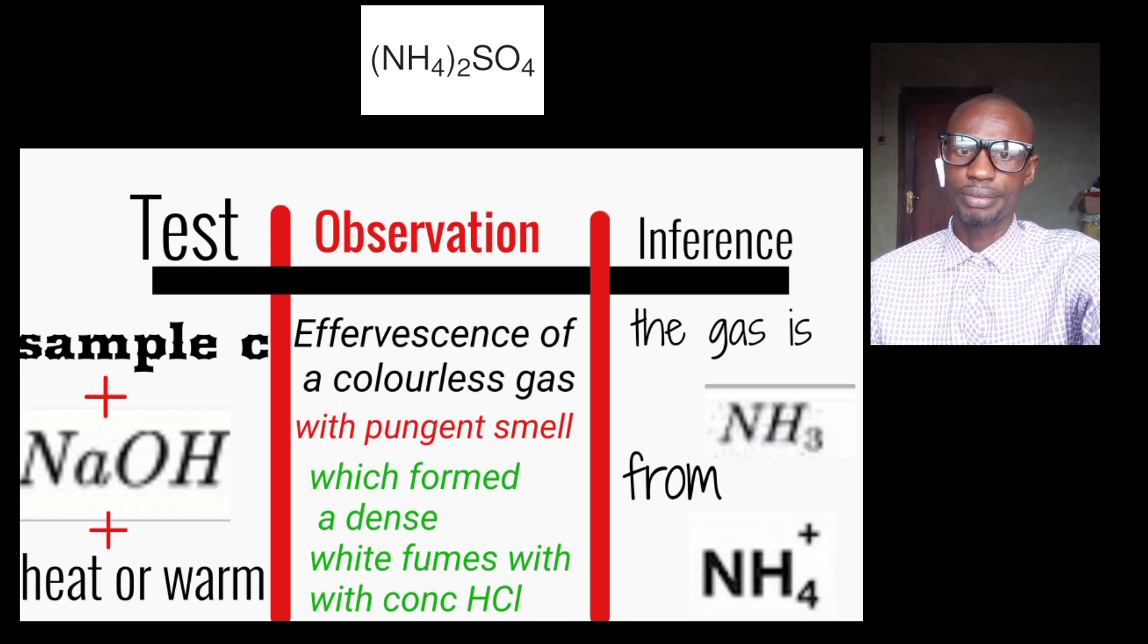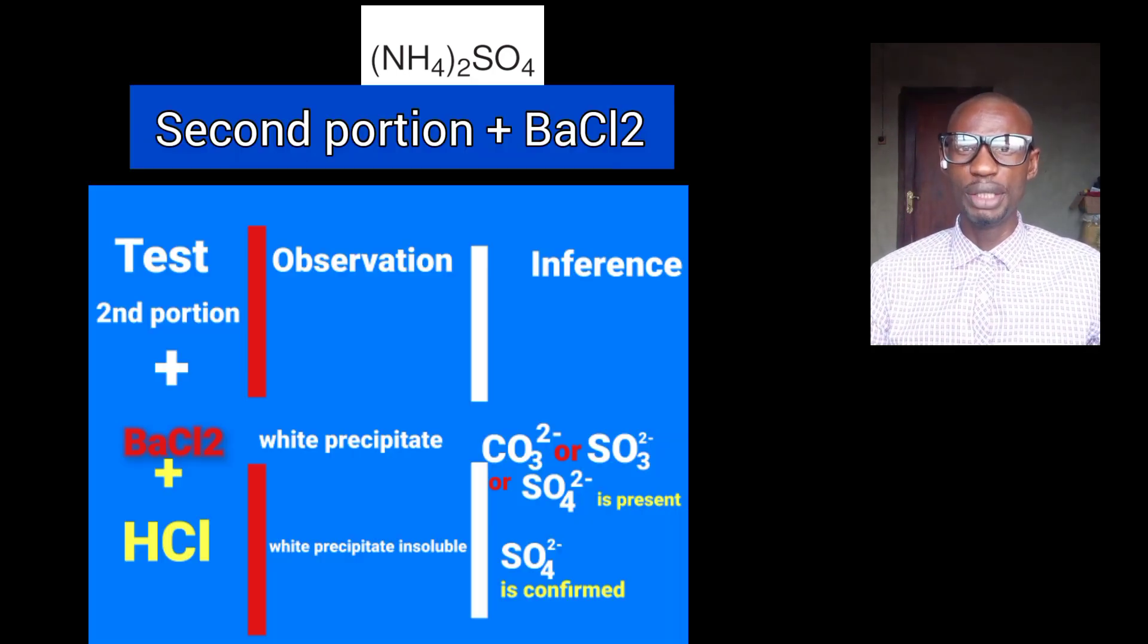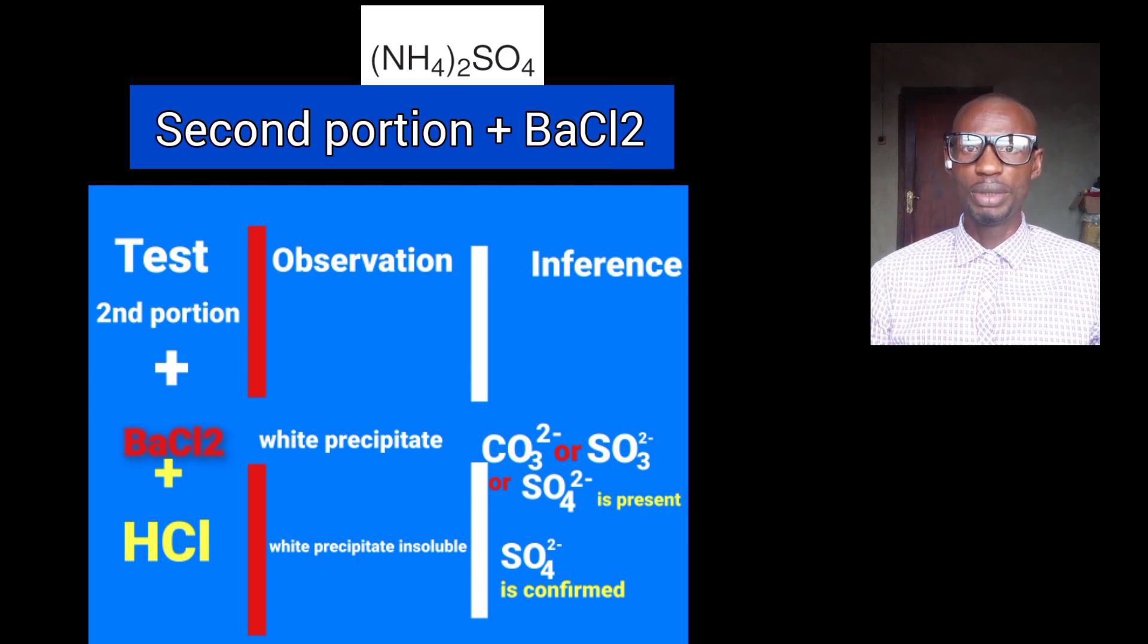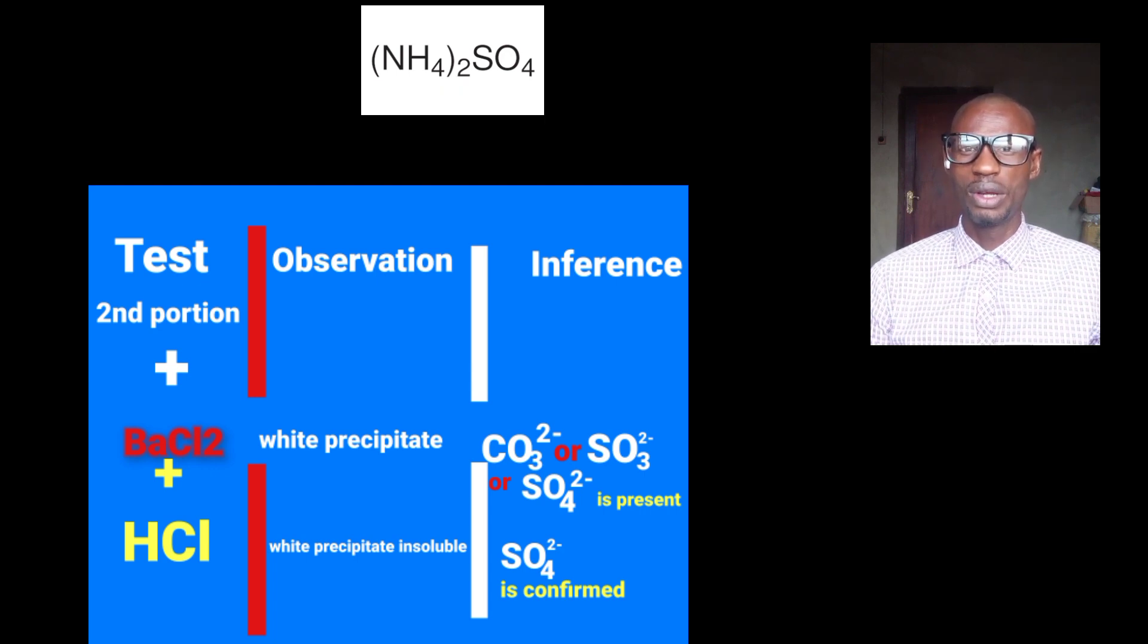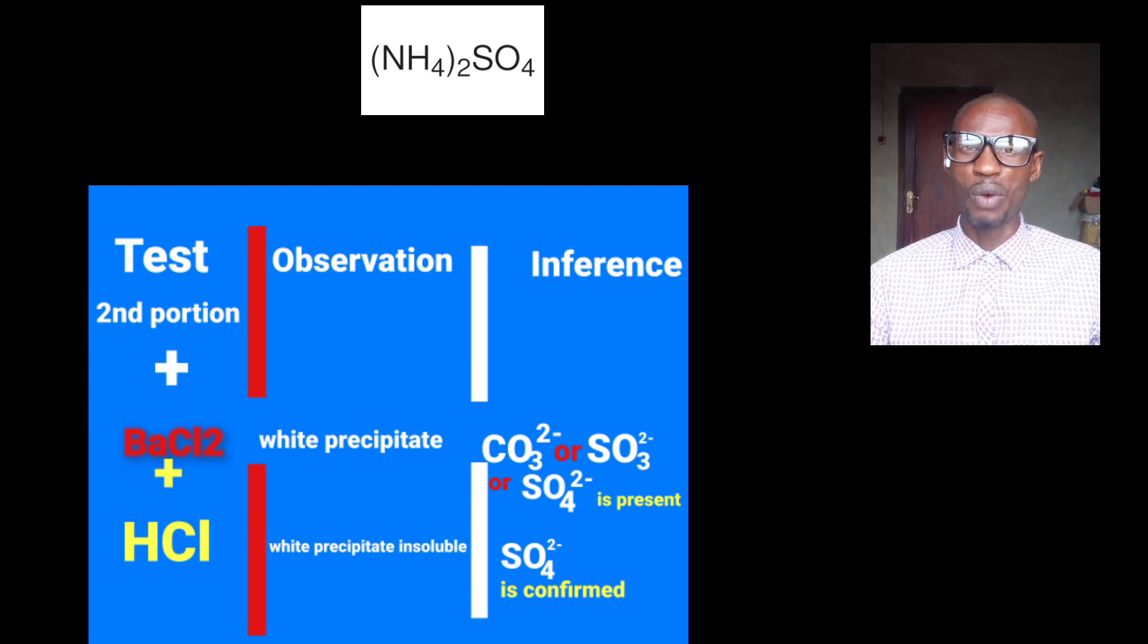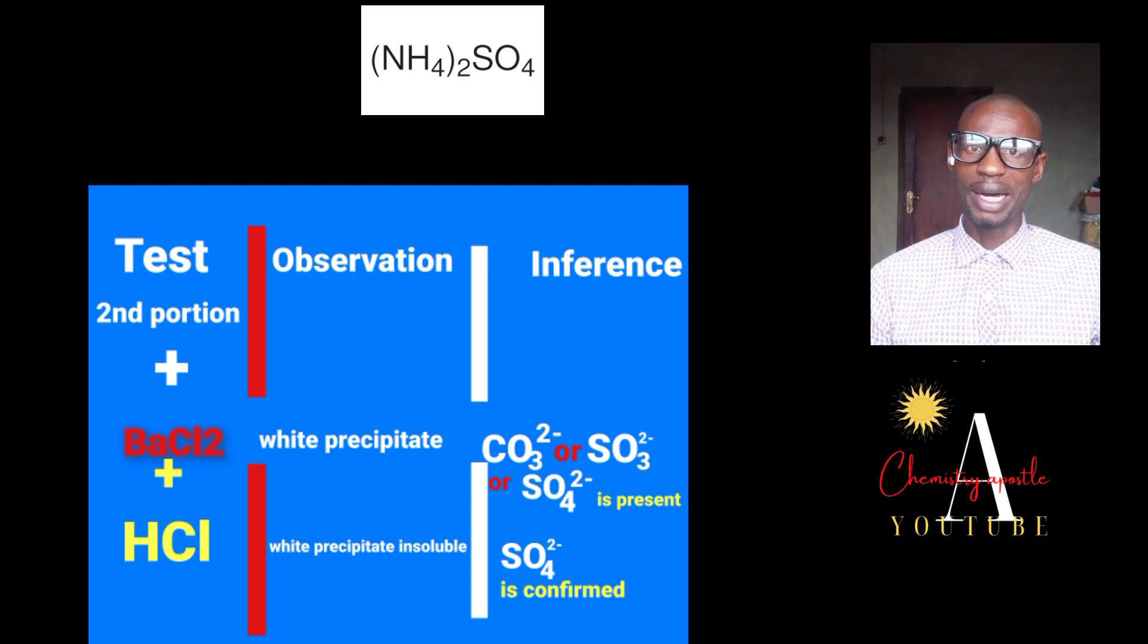To the second portion, add barium chloride. Whenever we are adding barium chloride, it is an indication that we are testing for either CO3 2-, SO4 2-, or SO3 2-. At the observation, we are going to have white precipitate. Note, don't write white precipitate singular. That will cost you one mark. And in your inference, we are going to have SO3 2-, SO4 2-, or CO3 2-.